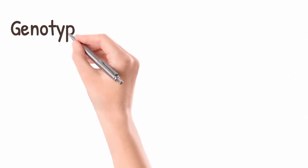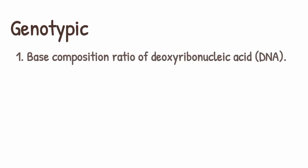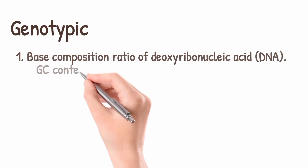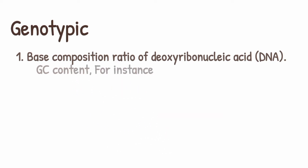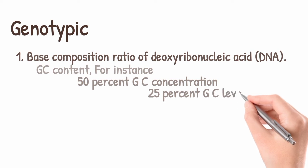To identify an organism genetically, we have two ways. The first one is base composition ratio of DNA, for example, the guanine-cytosine component. We have two organisms: the first one has 50% guanine-cytosine component and the second one has 25% guanine-cytosine component. Obviously, these two organisms are not closely linked to each other. By this way, we determine the relatedness between organisms.